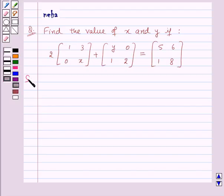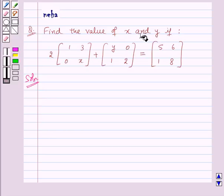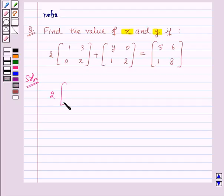Let's see its solution. We need to find the values of x and y and we are given 2 into 2 by 2 matrix with elements 1, 3, 0, x plus 2 by 2 matrix with elements y, 0, 1, 2 is equal to a 2 by 2 matrix with elements 5, 6, 1, 8.